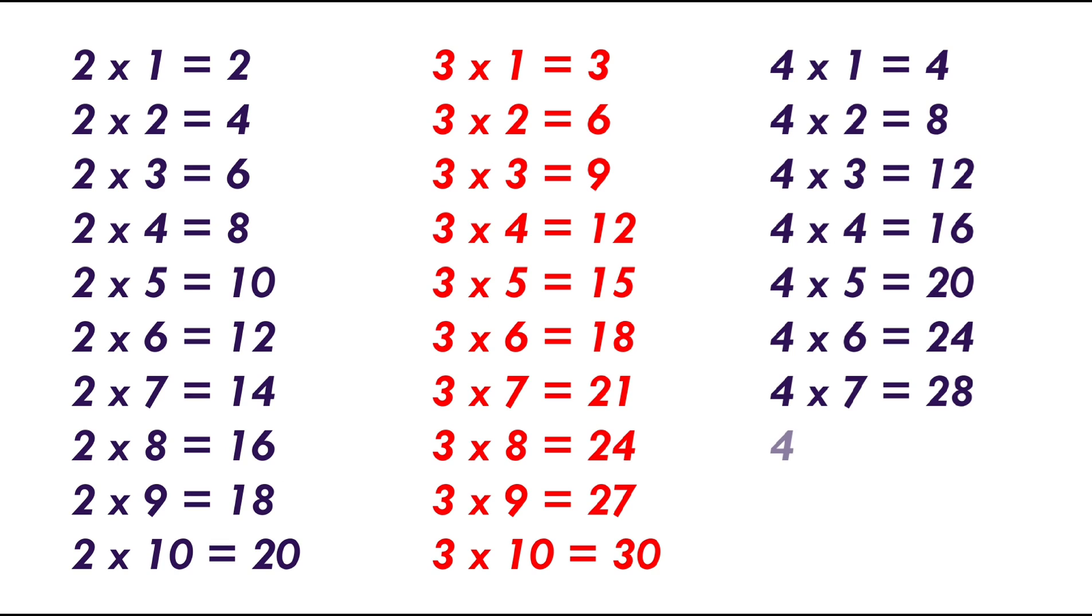4 times 7 equals 28, 4 times 8 equals 32, 4 times 9 equals 36, 4 times 10 equals 40.